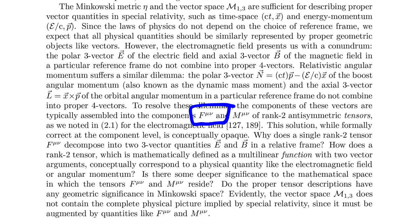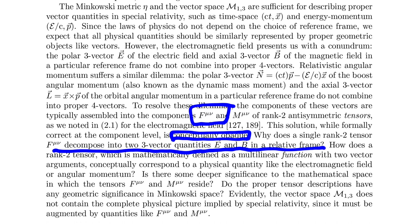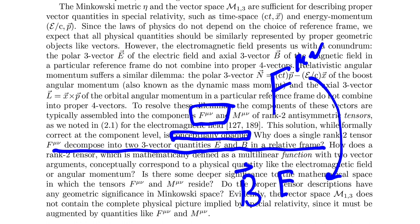They argue that while this is formally correct, it's conceptually opaque. They ask: why does a single rank-two tensor F_μν decompose into two three-vector quantities E and B in a relative frame? You have F_μν — the only way to speak about the electromagnetic field in total generality regardless of frame — but if you choose one particular frame, you can peel this apart and create a three-vector B and a three-vector E that's good for that particular frame. Why does this rank-two tensor decompose like that?